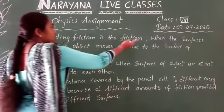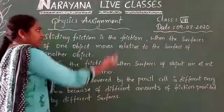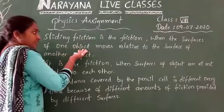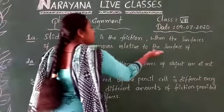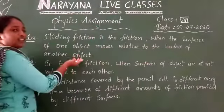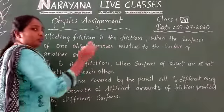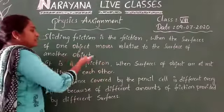Sliding friction is a type of friction when the surfaces of one object moves relative to the surface of another object. The surface of one object moves relative to the surface of another object, is called as sliding friction.